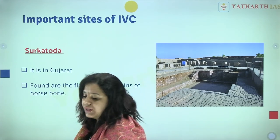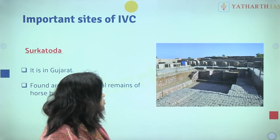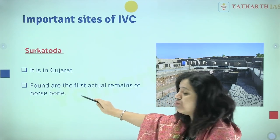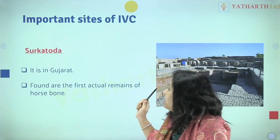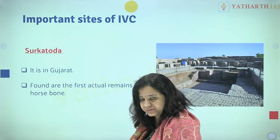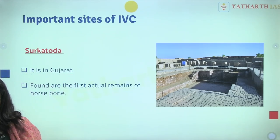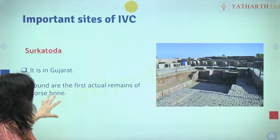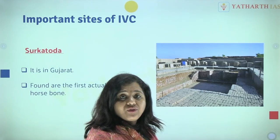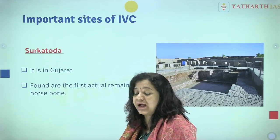Next is Surkotada, which was asked in a UPSC examination. Why is Surkotada very important from an examination point of view? Because you have found the first actual remains of horse bone from this site. Surkotada is in Gujarat. So here we found dog, sheep, camel, and now horse. We have also found burial pits, granaries, bangle factory, toy factory, brick making, and evidence of metallurgy.